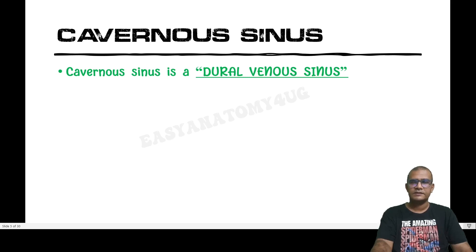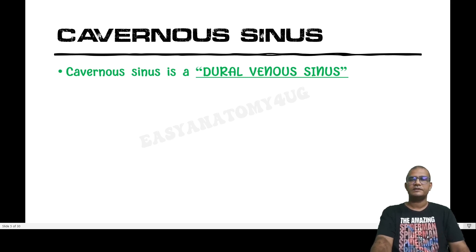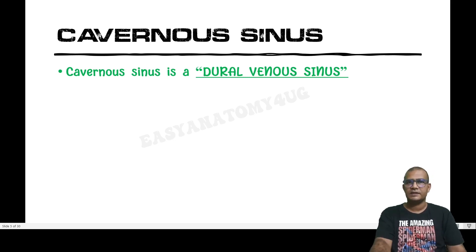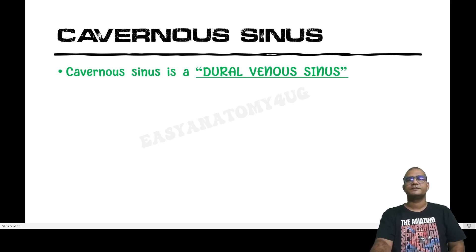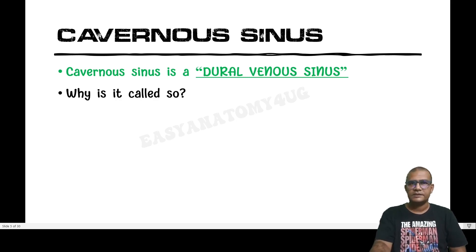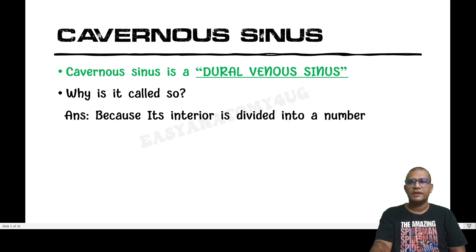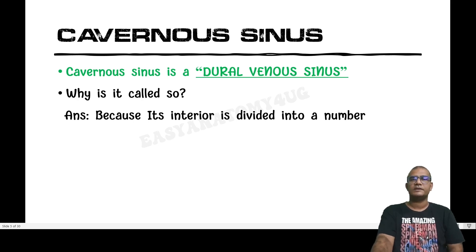Cavernous sinus is a dural venous sinus, like other dural venous sinuses such as superior sagittal sinus, inferior sagittal sinus, transverse, and sigmoid sinus. It is called cavernous sinus because the interior of this sinus is divided into caverns or multiple small spaces by fibrous bands called trabeculae or fibrous septa.